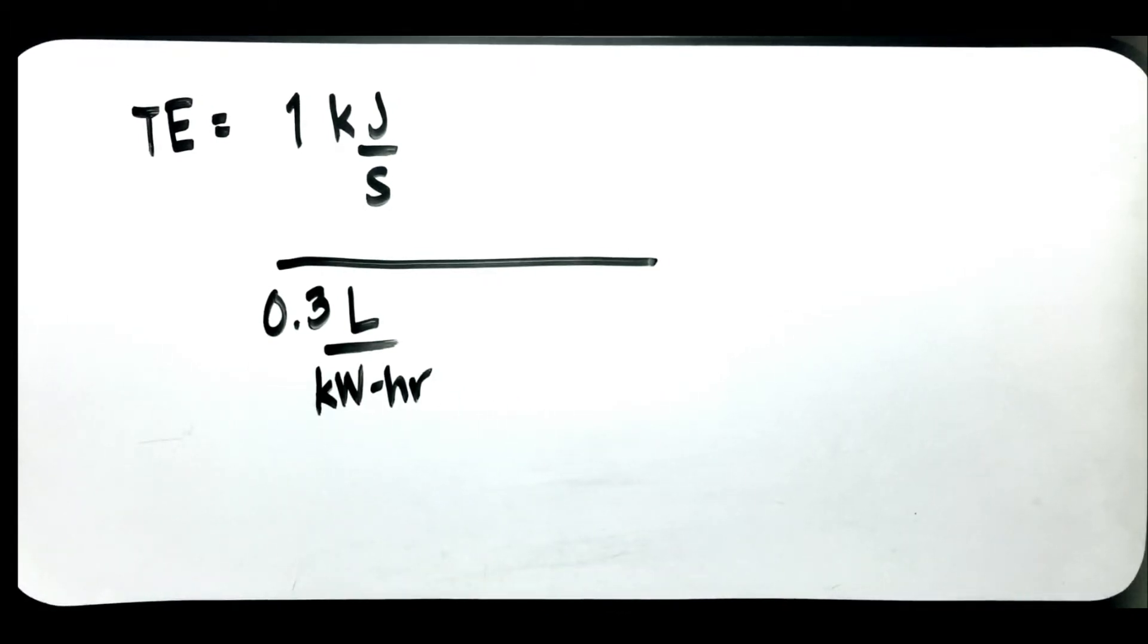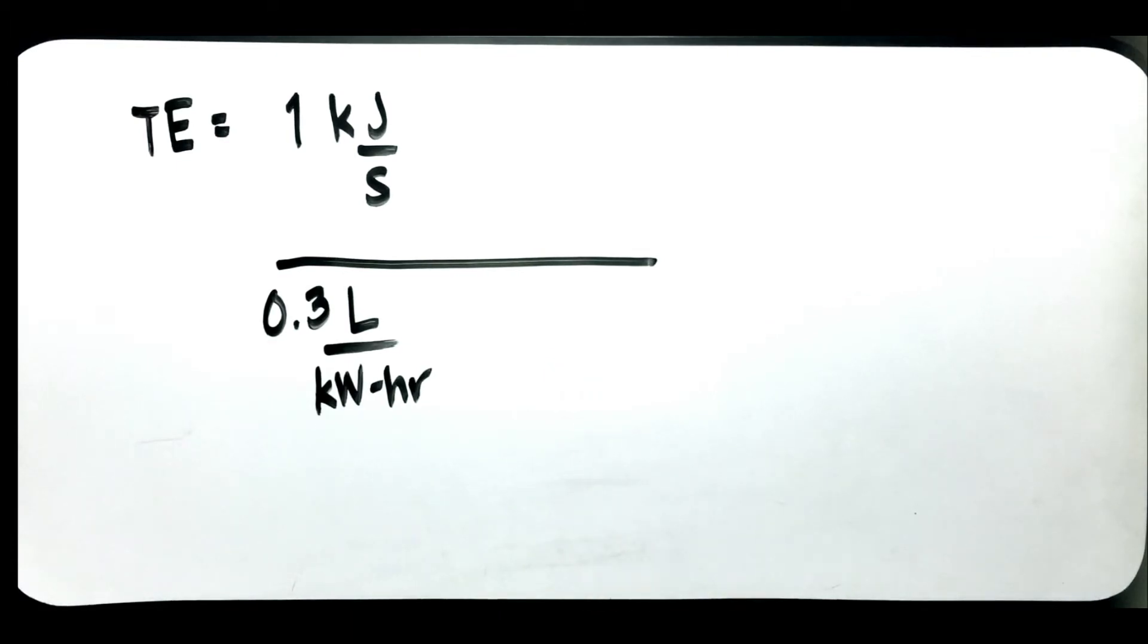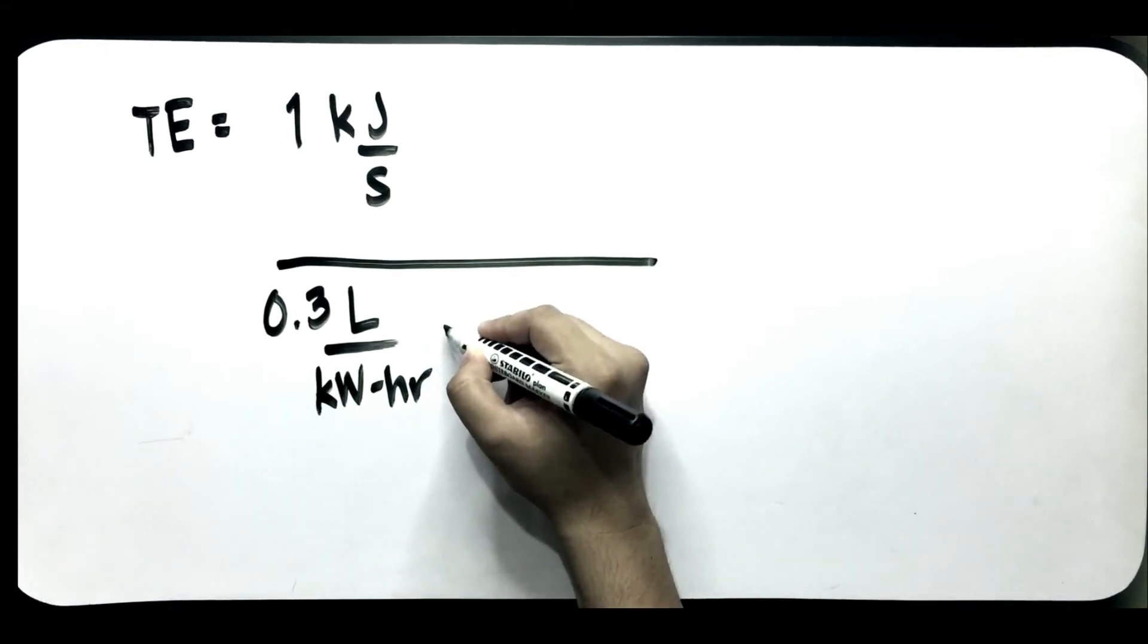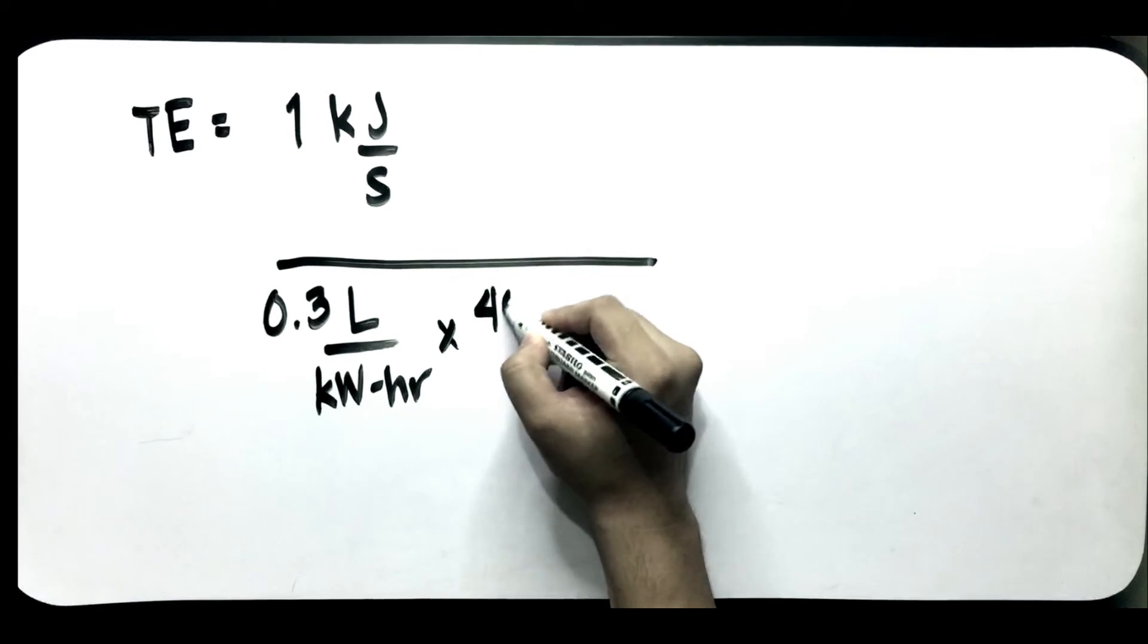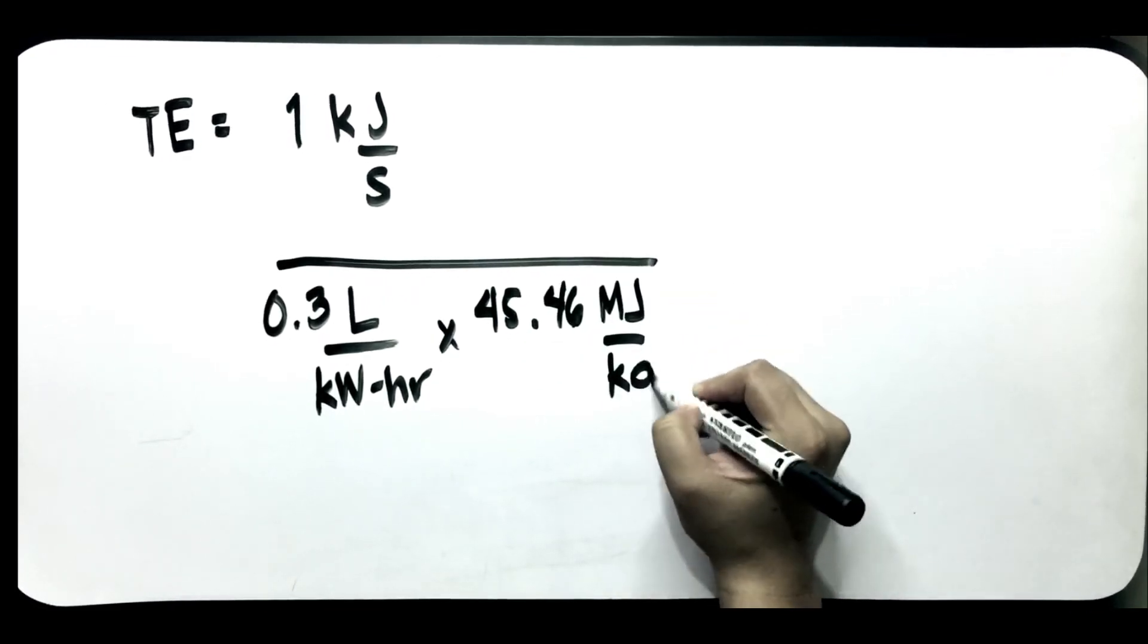Kaya lang, hindi pa natin ito agad masasolve. Kailangan natin ang mga iba pang values. Pag tinignan natin yung properties ng diesel na fuel, yung kanyang calorific value or yung energy content niya, makikita natin sa table, ito is 45.46 megajoule per kilogram.